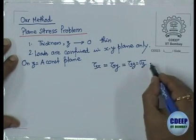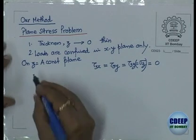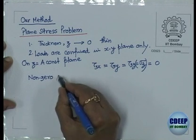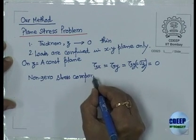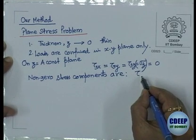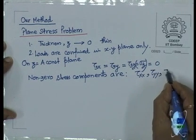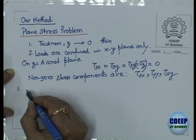So the non-zero stress components are only sigma xx, sigma yy, and tau xy - only 3. I will now go through the basic equations. In plane stress, the first set is the equilibrium equations.